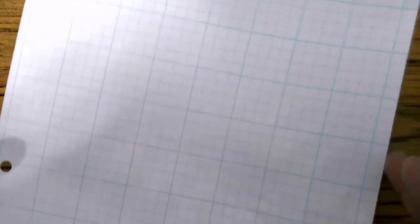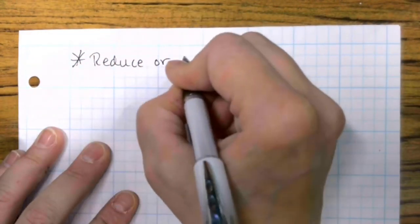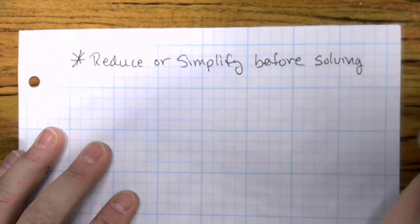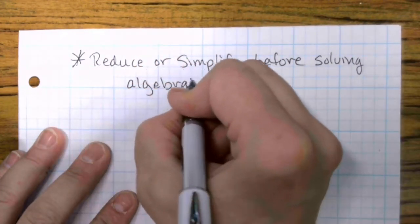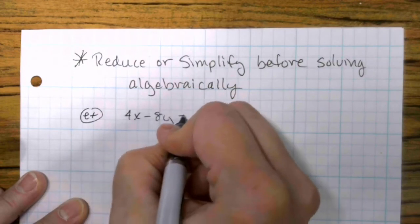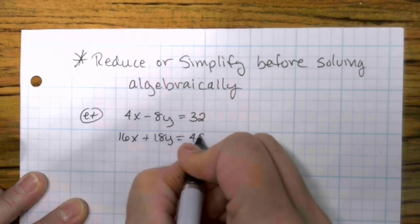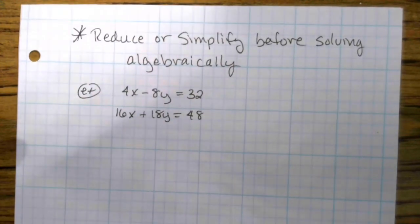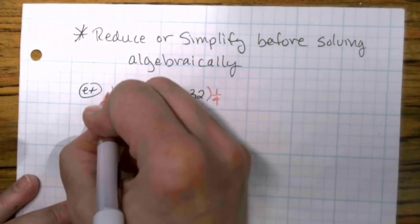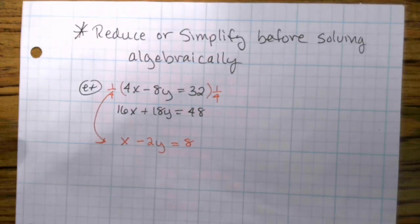All right, last thing I want to mention, this is more of a tip than anything else, is it is perfectly fine to reduce or simplify before solving. And I'm talking solving algebraically. So for example, if you were trying to solve 4x minus 8y equals 32, and 16x plus 18y equals 48, those numbers are huge. So rather than be solving with gigantic numbers, you can adjust the equations. I believe that 4 will come out of everything, so I'll multiply both sides by a fourth. And then that would be a 1x minus 2y equals 8. Much nicer equation to deal with.